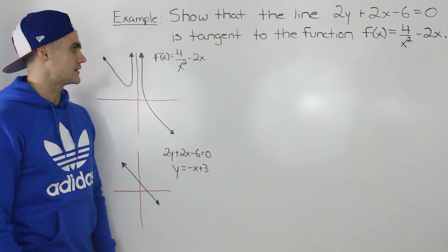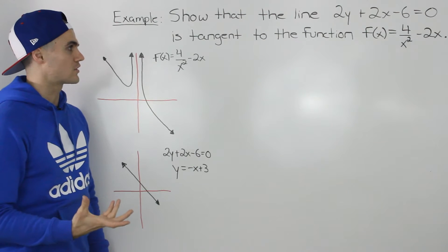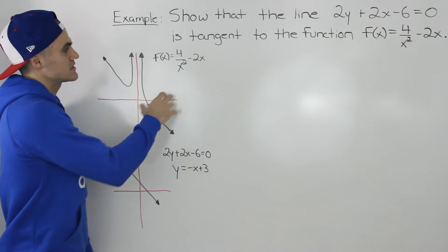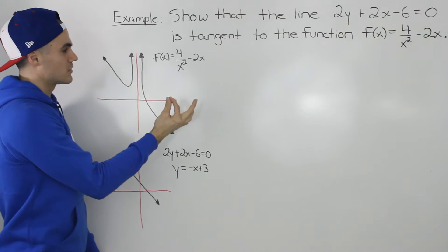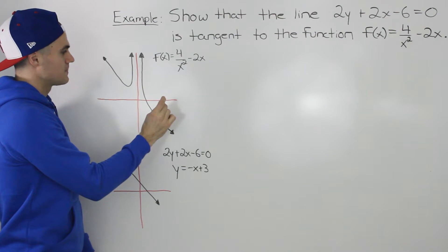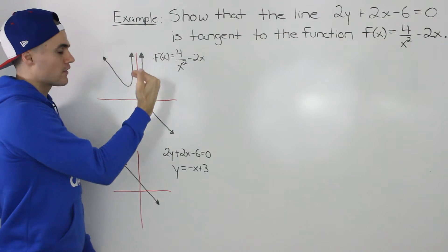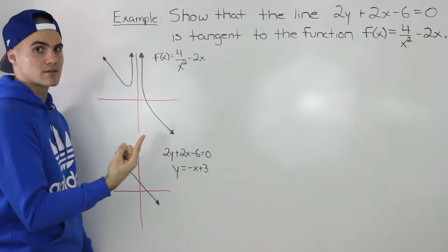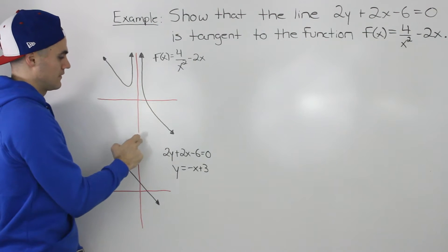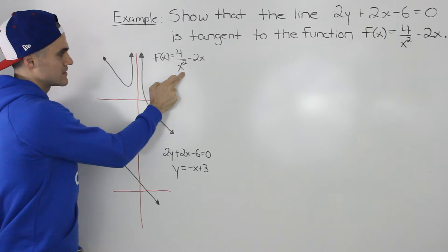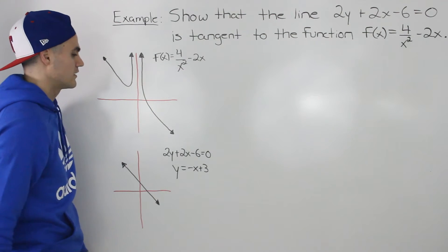Before we proceed, let's show visually what's going on. You don't always have to graph whatever you're given, especially a function like this — it's pretty complex. This is a rational function. If you combine it into one fraction, the degree of the numerator will be greater than the degree of the denominator by 1, so that means there's going to be an oblique asymptote. There's also a vertical asymptote at x equals 0, because if we plug in 0 for this function, it will be undefined.